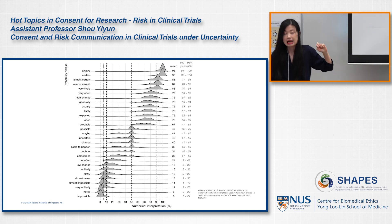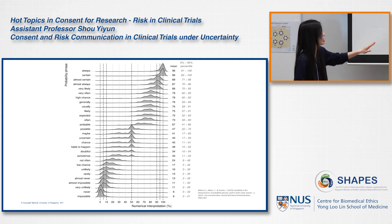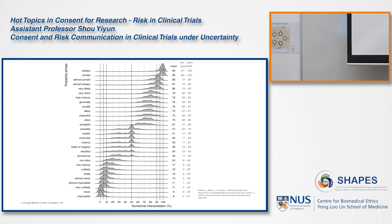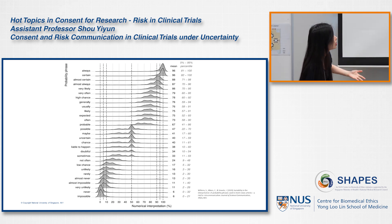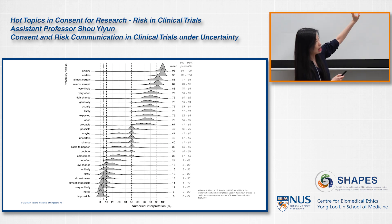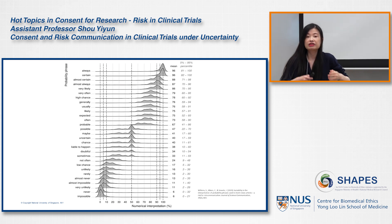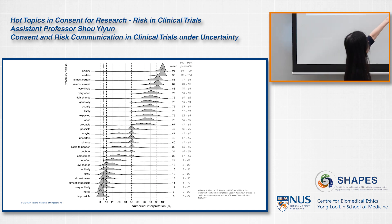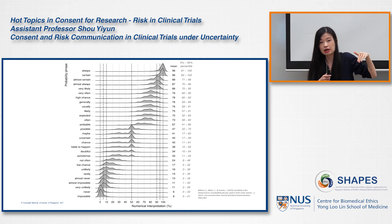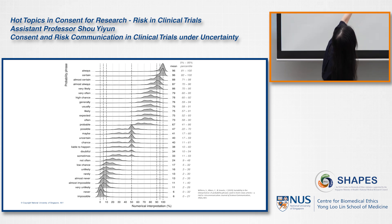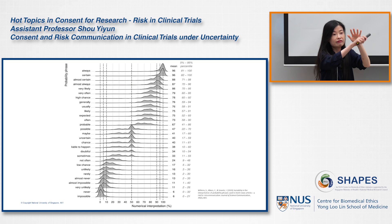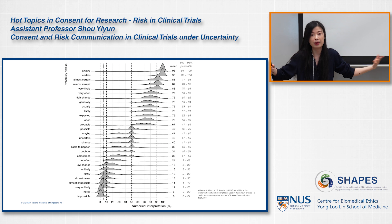A figure captures lay people's interpretation of different probability phrases—from 'impossible' and 'never' at the bottom to 'always' and 'almost certain' at the top, varying in degree of certainty. Even for 'impossible' and 'never,' there is individual difference—not everybody thinks 'impossible' means 0%. Not everybody thinks 'always' means 100%. For terms like 'maybe,' 'possible,' and 'probably,' there is a very wide spread in people's interpretation of the meaning behind these terms.